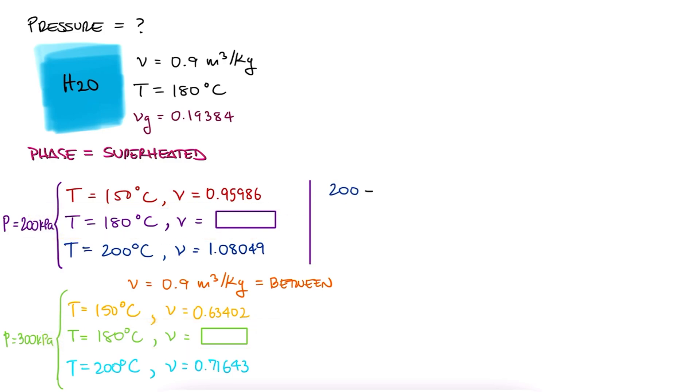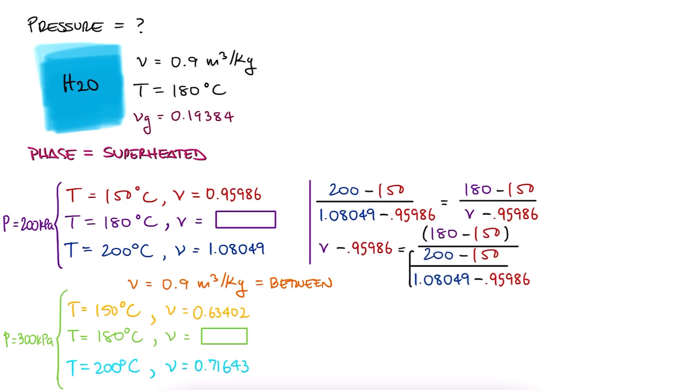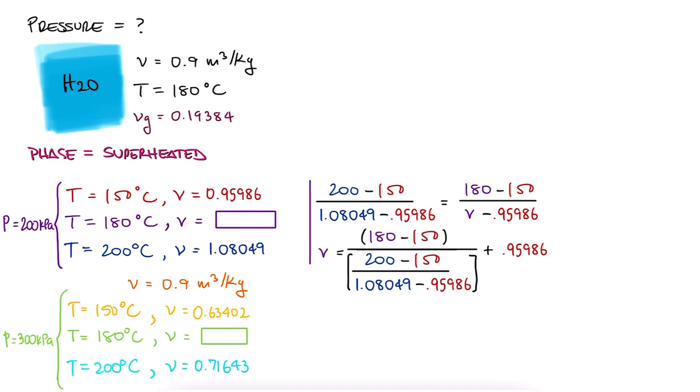We've done this interpolation in previous examples, so I won't go into detail here. You can watch the previous examples in the main lecture video linked below if you haven't already. This process would yield a specific volume of 1.03 cubic meters per kilogram.